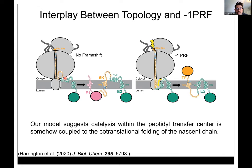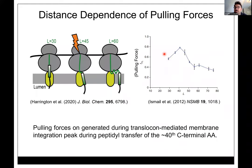Our model is that you can make mutations upstream that affect translation and decoding at the slippery sequence — but the question is how. How is there feedback between what happens at the translocon and catalysis at the ribosomal decoding center? We were somewhat naive about how these things should be coupled.